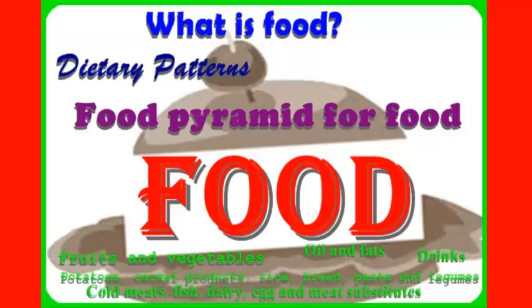The food pyramid, besides the five food groups, also gives five guidelines or tips: food should be varied; eat plenty of vegetables, fruit and bread; don't overeat; use less saturated fat; and go safe with food.